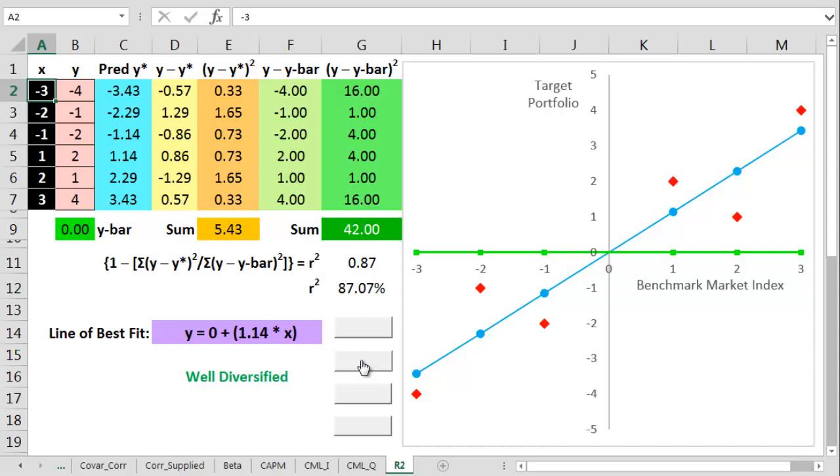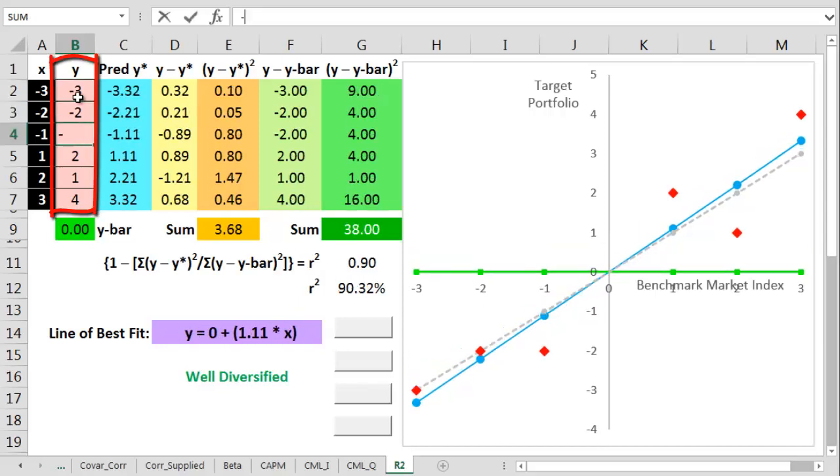So let's try to get a perfect r square figure of 100%. To do that, it's easy just to make all the target portfolio numbers equal the benchmark numbers. Before I do that, though, I'll plot a perfect matching line. Now let's make all the points the same.